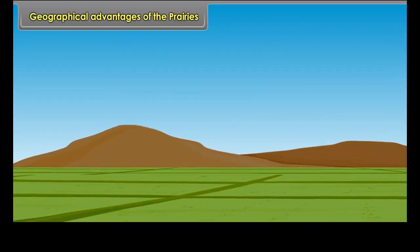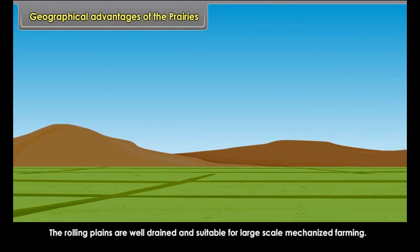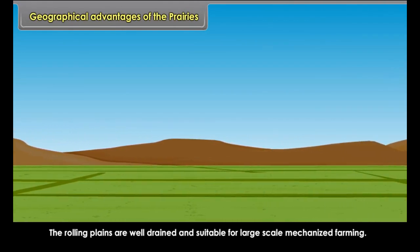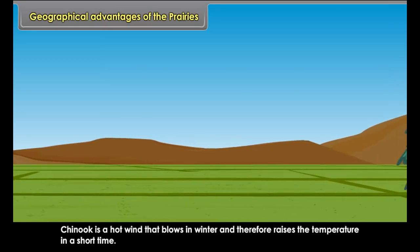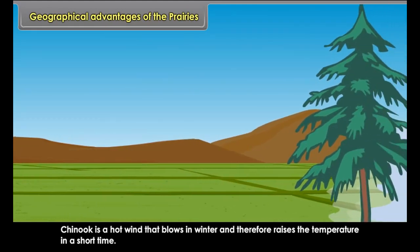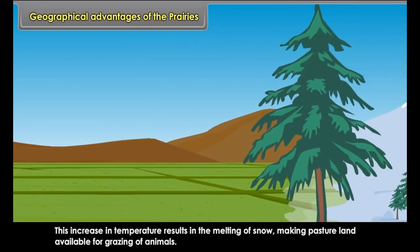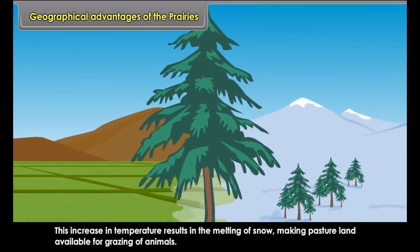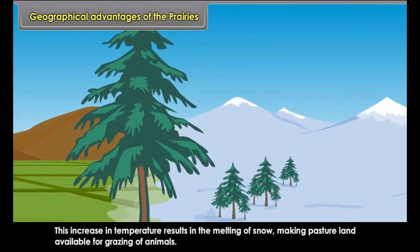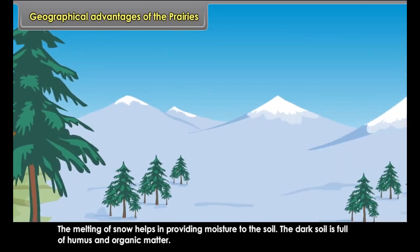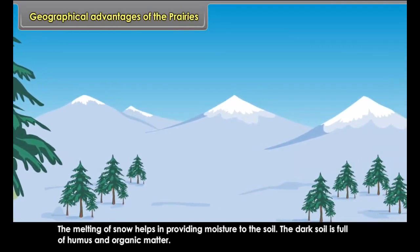Geographical Advantages of the Prairies: The rolling plains are well-drained and suitable for large-scale mechanized farming. Chinook is a hot wind that blows in winter and raises the temperature in a short time. This increase in temperature results in the melting of snow, making pasture land available for grazing and providing moisture to the soil. The dark soil is full of humus and organic matter.